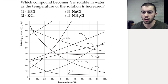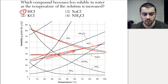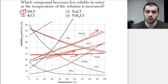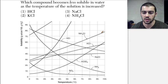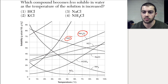Which compound becomes less soluble in water as we increase the temperature? Looking at the graph, HCl decreases as temperature increases, so right away HCl is the answer. KCl and NaCl both increase slightly, NH₄Cl also goes up with increasing temperature. The only compound with a negative slope — becoming less soluble as temperature increases — is HCl. To summarize solubility curves: lines represent the saturation point, below the line is unsaturated, above the line is supersaturated, and we identify the different substances to compare them.